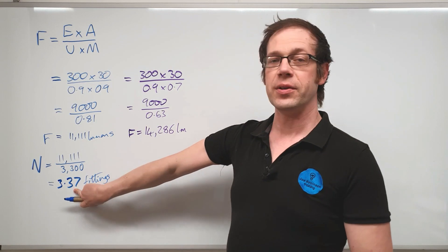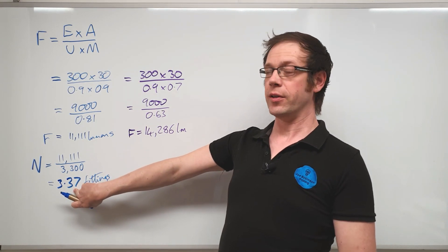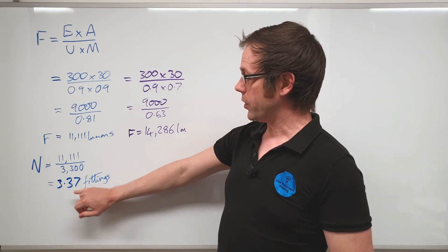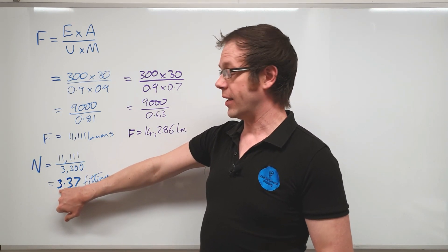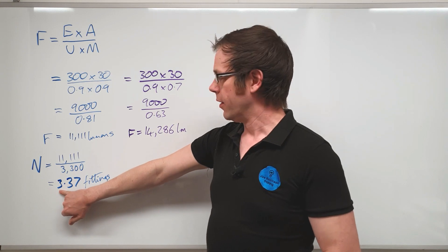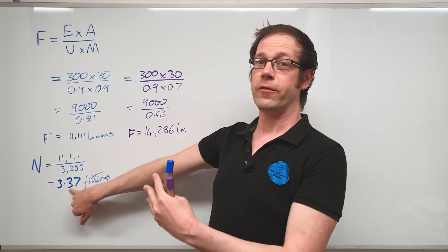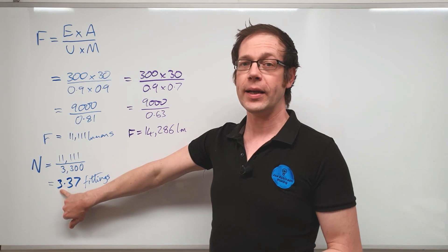I'm sure that the eagle-eyed among you will look at that and go, well how on earth are we going to install just over a third of a fitting? Well obviously we're not going to do that. Now traditionally with math what we would do is we'd look at that number and think, right, well I need to round that off, I need a whole number there. So you'd look at the following number and think, right that's five or less so therefore I'm going to round that down to three.